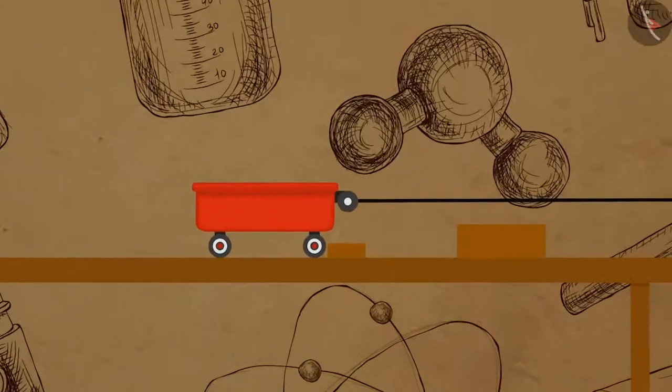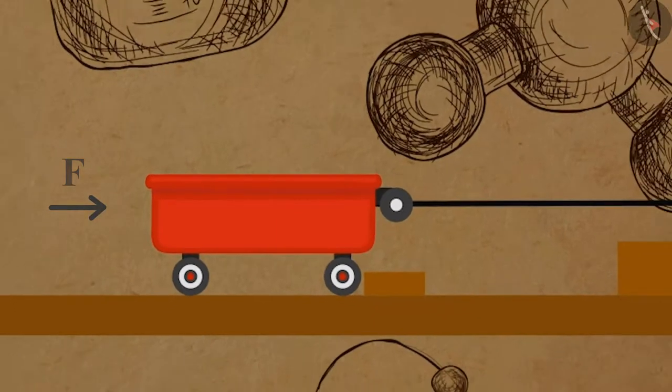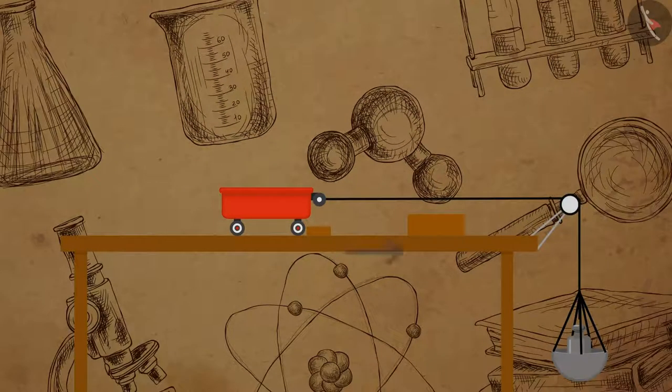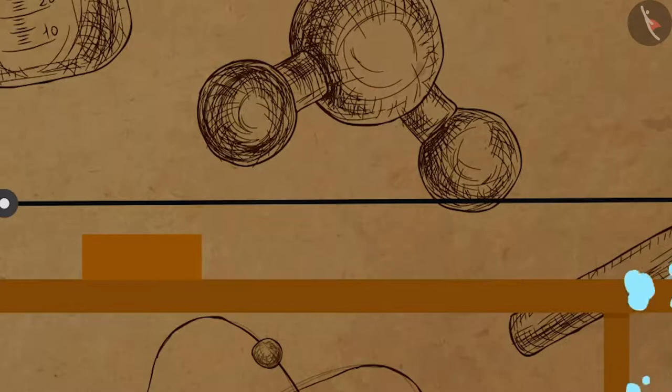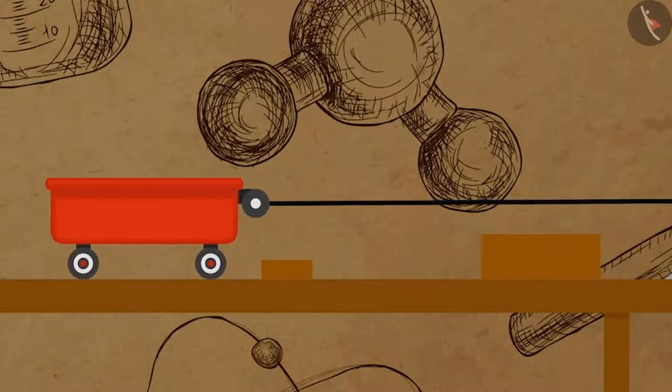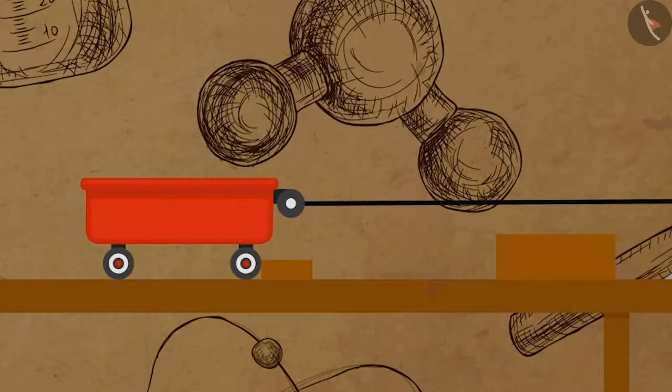Now we will see that the trolley hits the wooden block and displaces it to a certain distance. Put a stop to the trolley after it hits the block and note the displacement of the block.